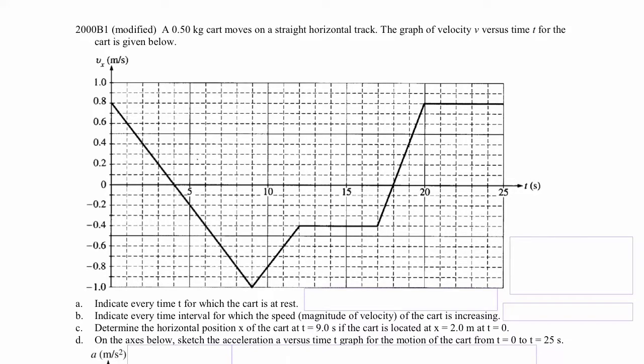A 0.5 kg cart moves on a straight horizontal track. The graph of velocity v versus time t for the cart is given. Part a: indicate every time t for which the cart is at rest. This is straightforward because we have velocity as a function of time — the cart is at rest when velocity equals 0 m/s. Looking at the graph, that occurs at t = 4 seconds and t = 18 seconds.